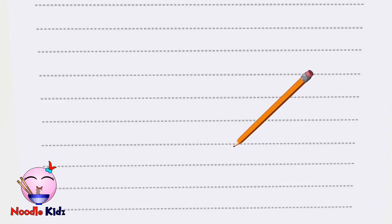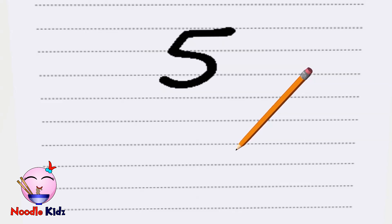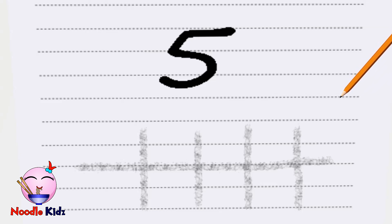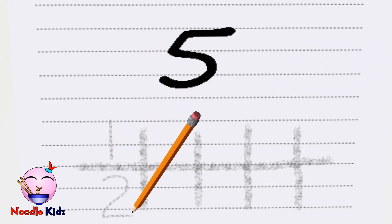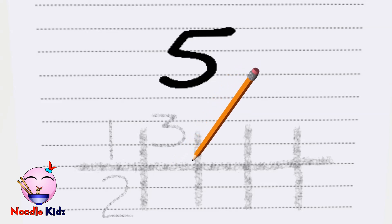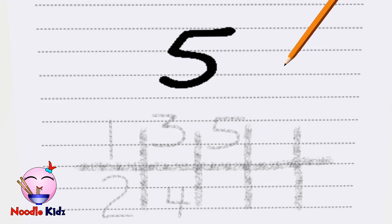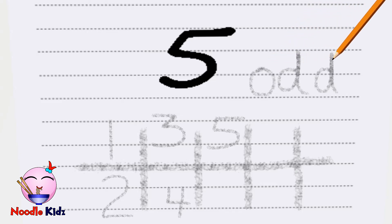Let's try this together. Please get a paper and a pencil. Ready? Is five an even or an odd number? First, draw the frames on the paper like this. Now, let's write down the numbers: one, two, three, four, five. Is five in the top frame or bottom frame? It's in the top frame, which means five is an odd number.